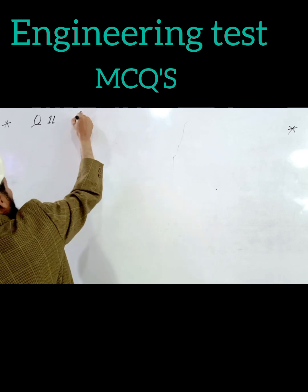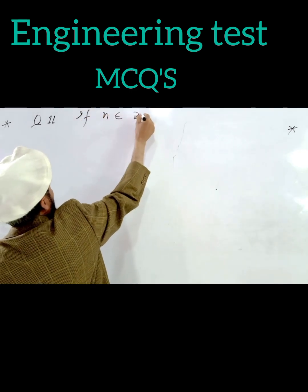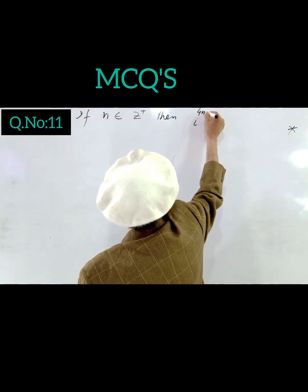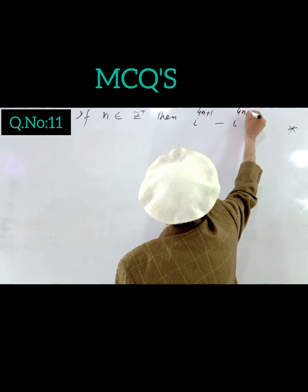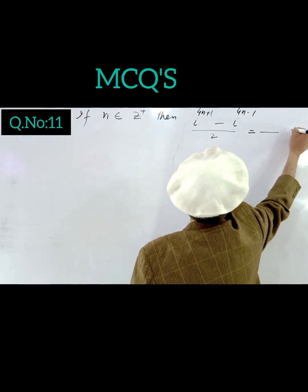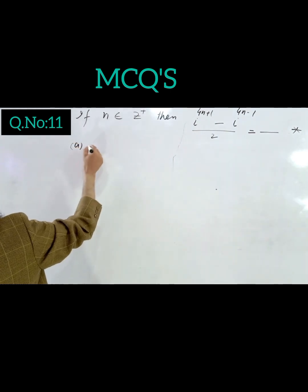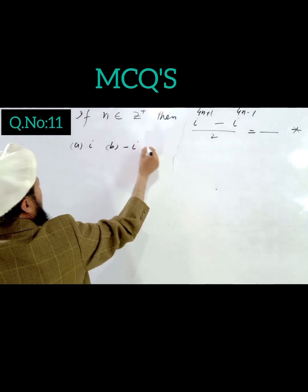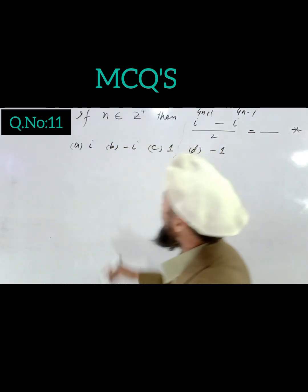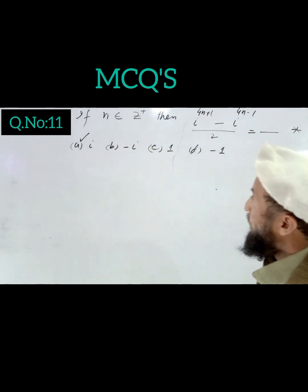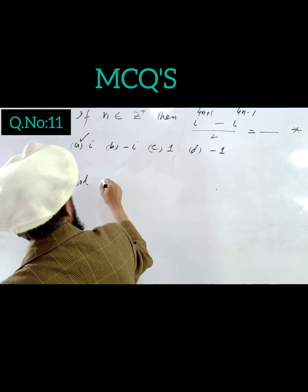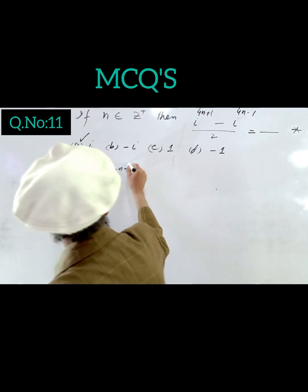Question 11: If n belongs to positive integers, then what is the result of (iota^(4n+1) minus iota^(4n-1)) divided by 2? We use the property of iota powers. For iota^(4n+1), since the remainder is 1, we get iota.